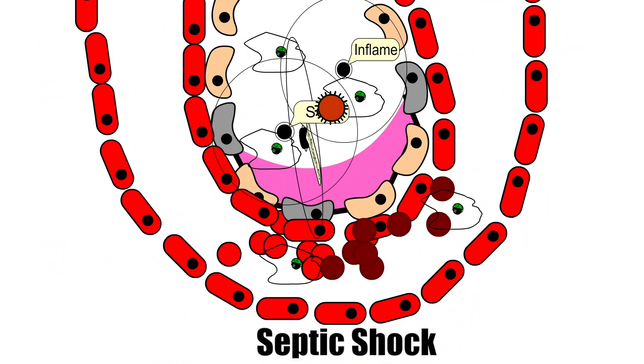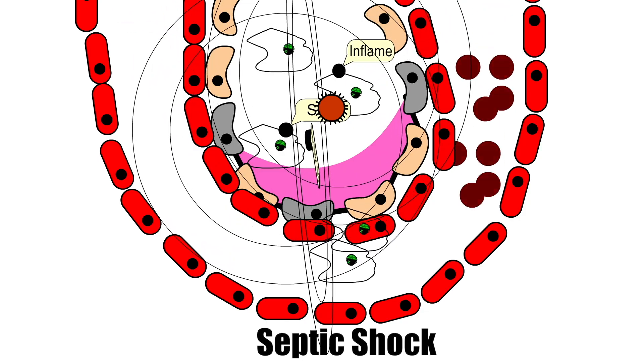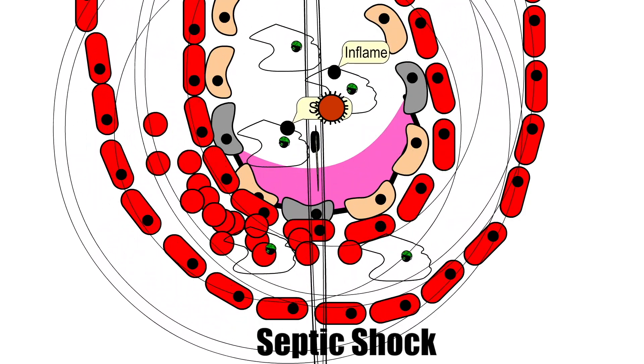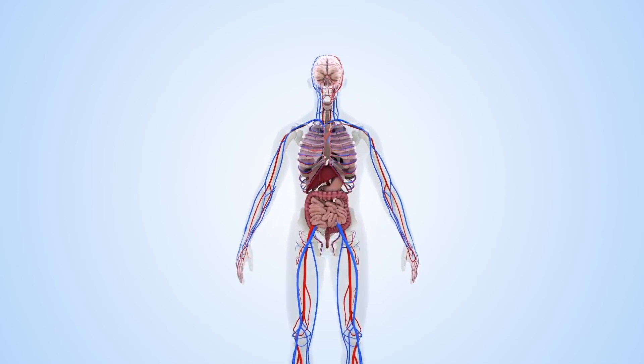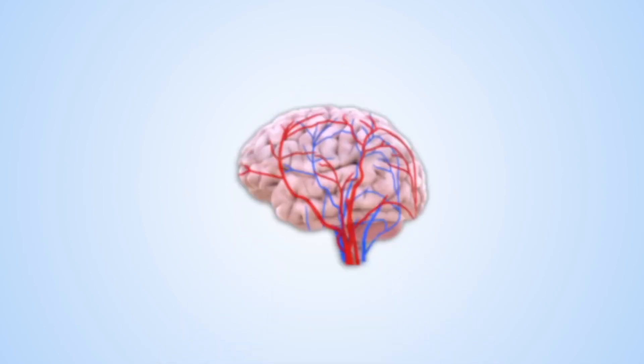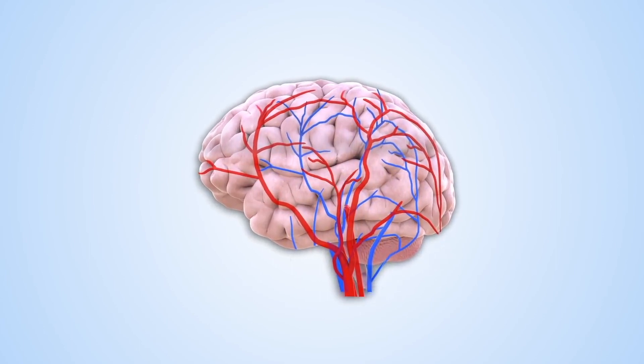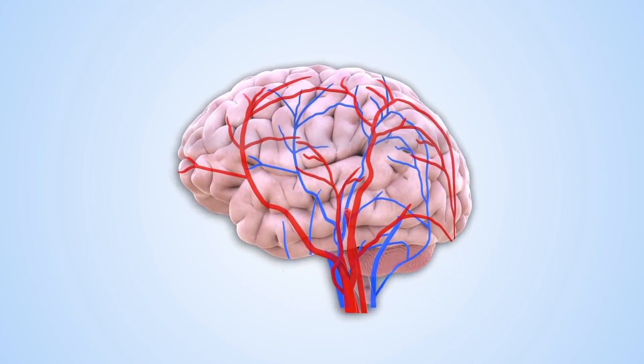Septic shock is a severe and potentially fatal condition that occurs when sepsis leads to life-threateningly low blood pressure, and low blood pressure is harmful because the brain will fail to receive enough blood and therefore enough oxygen and nutrients to survive.